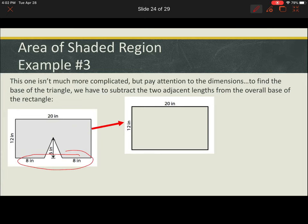So to find the base of the triangle, we're going to have to subtract those two eight-inch lengths from the overall length, as we see in the top of the rectangle, which is 20. So after subtracting, we see we now have the base for the non-shaded triangle to be four inches.